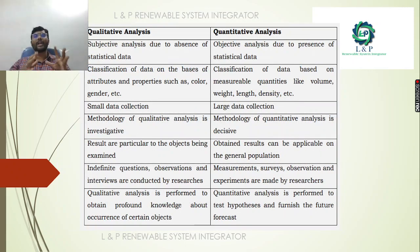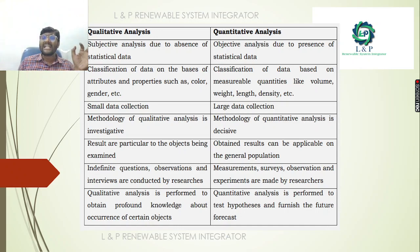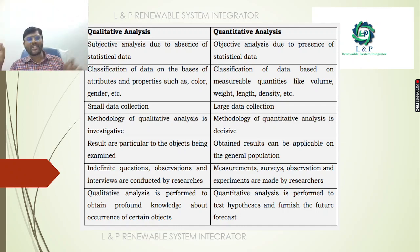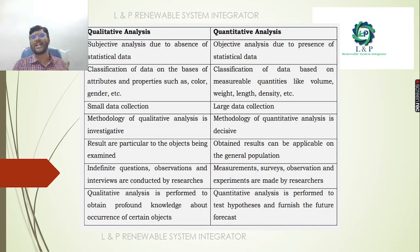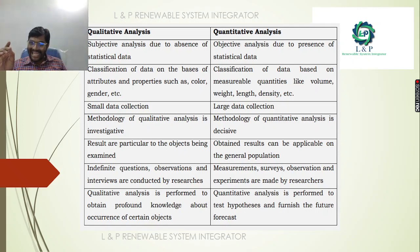When finding the difference between qualitative and quantitative analysis: qualitative is a subjective analysis because of the absence of statistical data, while quantitative is an objective analysis due to the presence of statistical data. Qualitative classifies data based on attributes and properties. Quantitative classifies data based on measurable quantities like volume, weight, and length. Qualitative involves a small data collection, while quantitative involves a large data collection.